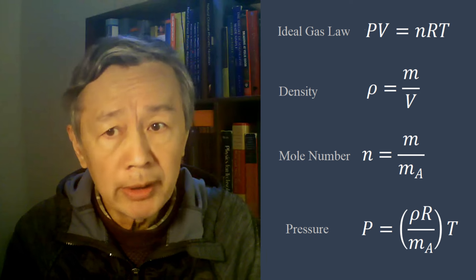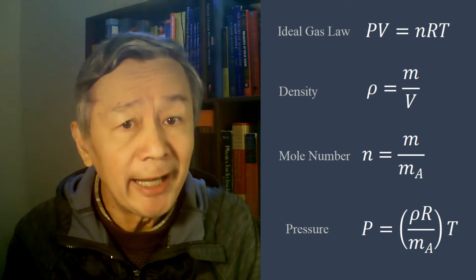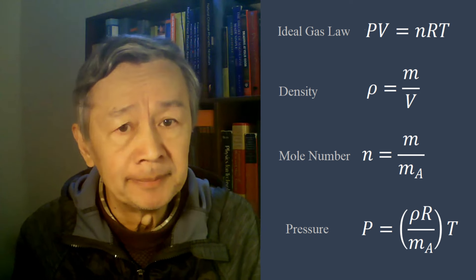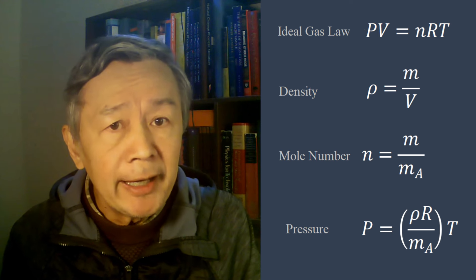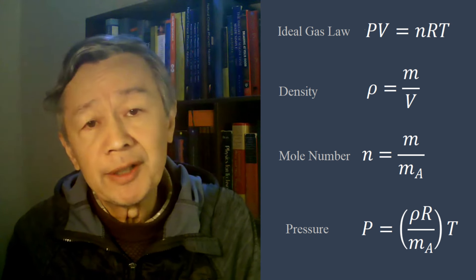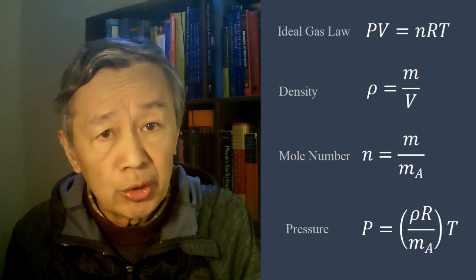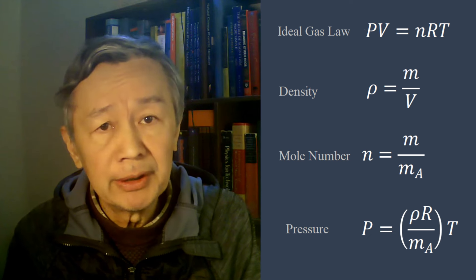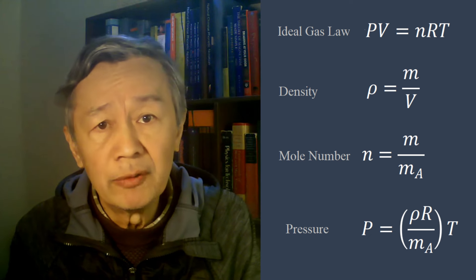For air, the mean molar mass is close to 28.96 grams. Obviously, the mean air molar mass is almost the same no matter how CO2 changes from doubling to 3 times or 4 times.